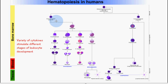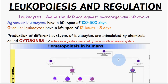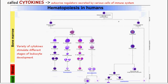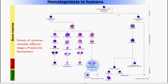From the hemocytoblast, it can progress and either form a common myeloid progenitor or a common lymphoid progenitor. The common lymphoid progenitor is responsible for producing the B and T lymphocytes, plasma cells, and natural killer T cells. The common myeloid progenitor is responsible for producing the granular leukocytes — such as the basophil, neutrophil, and eosinophil — and also the monocyte.